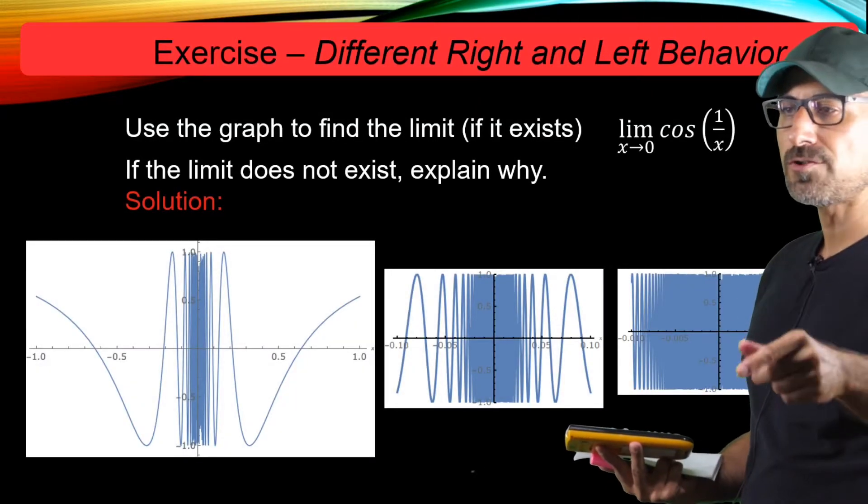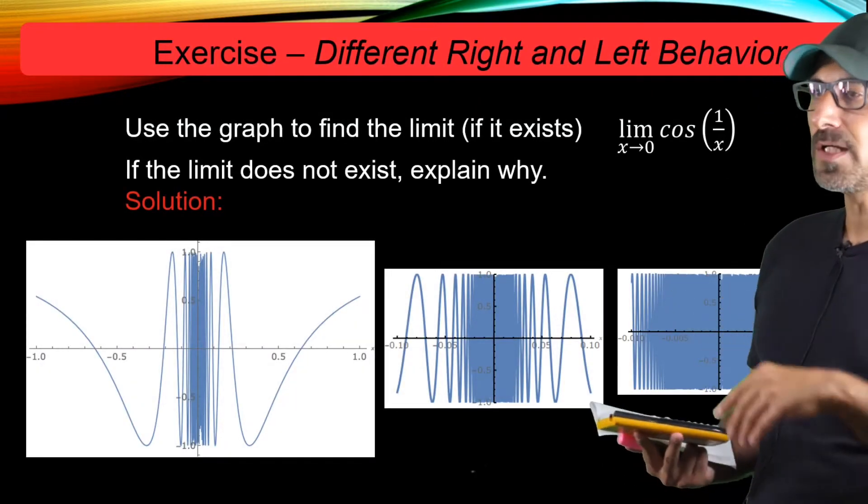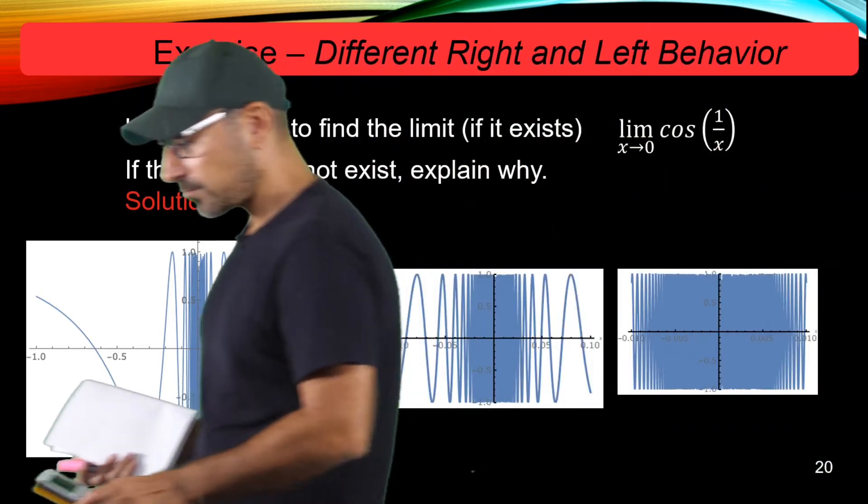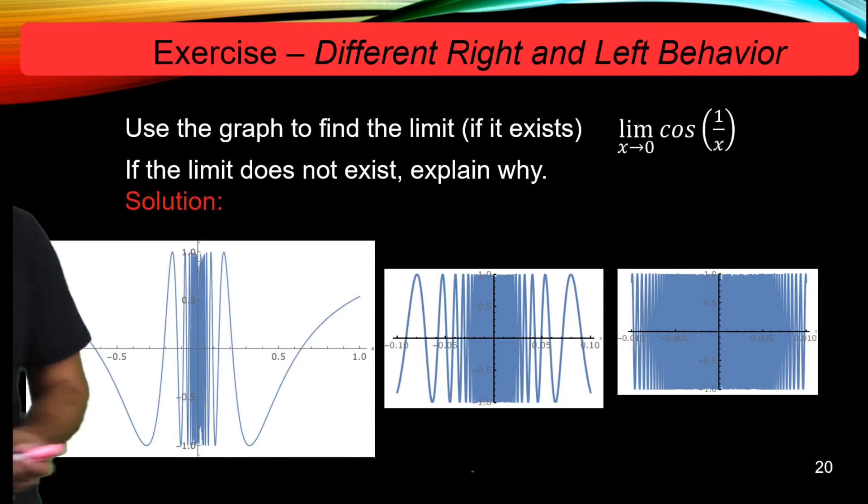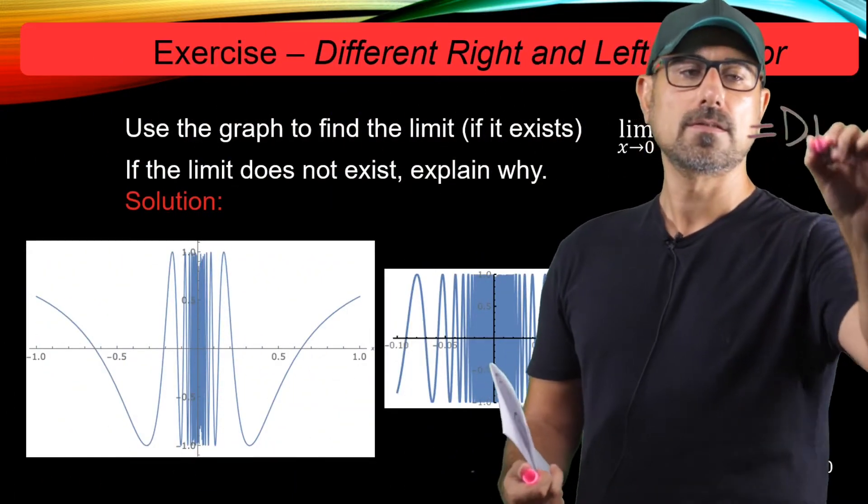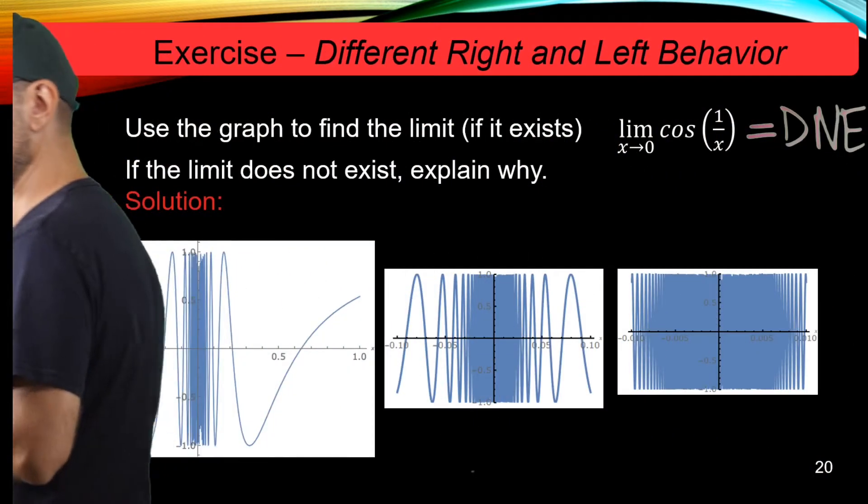The corresponding function values are not approaching anywhere, either from the left or right. And since we have a lot of fluctuation going on over there, we conclude that the limit of the function doesn't exist.